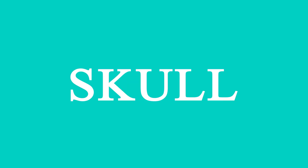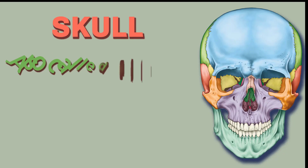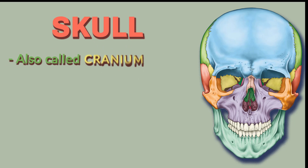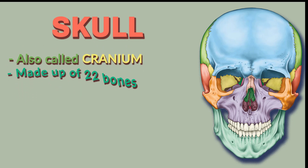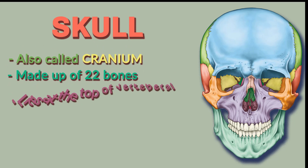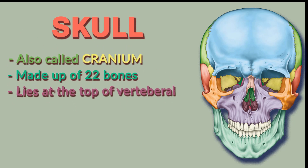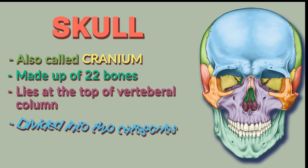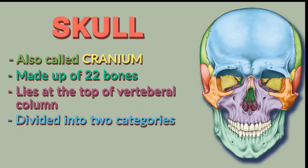In this video, we will discuss various parts of the axial skeleton, beginning with the skull. The skull, also called the cranium, is made up of 22 bones and lies on the top of the vertebral column.